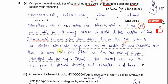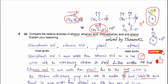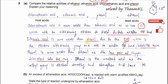Phenol is more acidic than ethanol because the lone pair on oxygen delocalizes into the ring, weakening the O–H bond and forming more H⁺. Ethanol is the least acidic because it has an alkyl group, which is electron donating and strengthens the O–H bond.